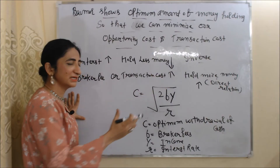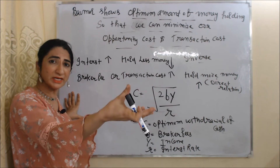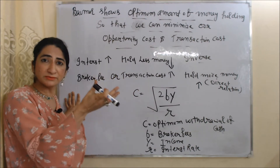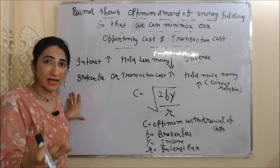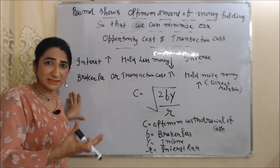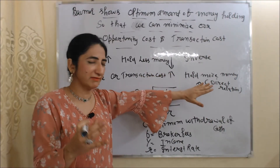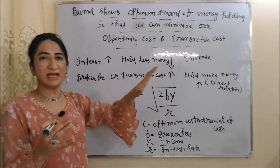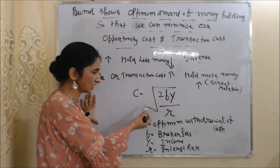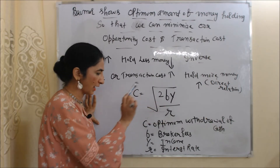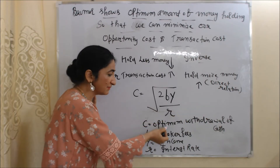On the other hand, transaction cost and money holding have a direct relation. When transaction cost is high, we will hold more money — for example, if broker fees are very high, the investment cost is high, so instead of investing, we will hold money. So transaction cost and holding money have a direct relation, while interest rate and holding money have an inverse relation. This is shown in the formula: C = √(2bY/r), where C is the optimum withdrawal of cash.